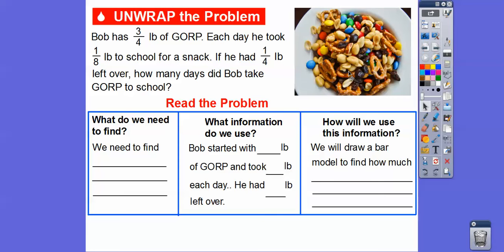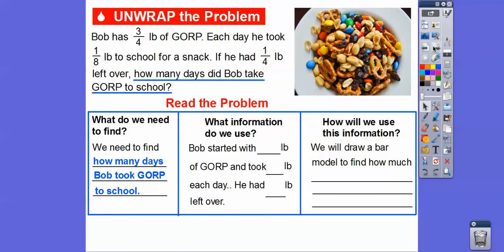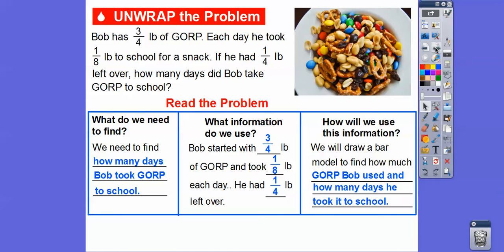What do we need to find? We need to find how many days Bob took gorp to school. What information are we going to use? Bob started with 3/4 of a pound of gorp. He took 1/8 of a pound to school each day. And he had 1/4 of a pound left over. We're going to draw a bar model to find out how much gorp Bob used and how many days he took it to school.